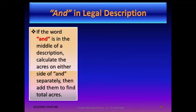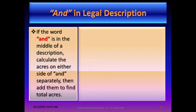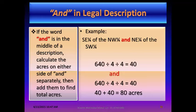In a legal description, if the word 'and' appears in the middle, calculate the acres on either side of 'and' separately, then add them to find the total. For example: the southeast quarter of the northwest quarter AND the northeast quarter of the southwest quarter. Above the 'and': 640 ÷ 4 ÷ 4 = 40 acres. Below the 'and': 640 ÷ 4 ÷ 4 = 40 acres. Total: 80 acres.